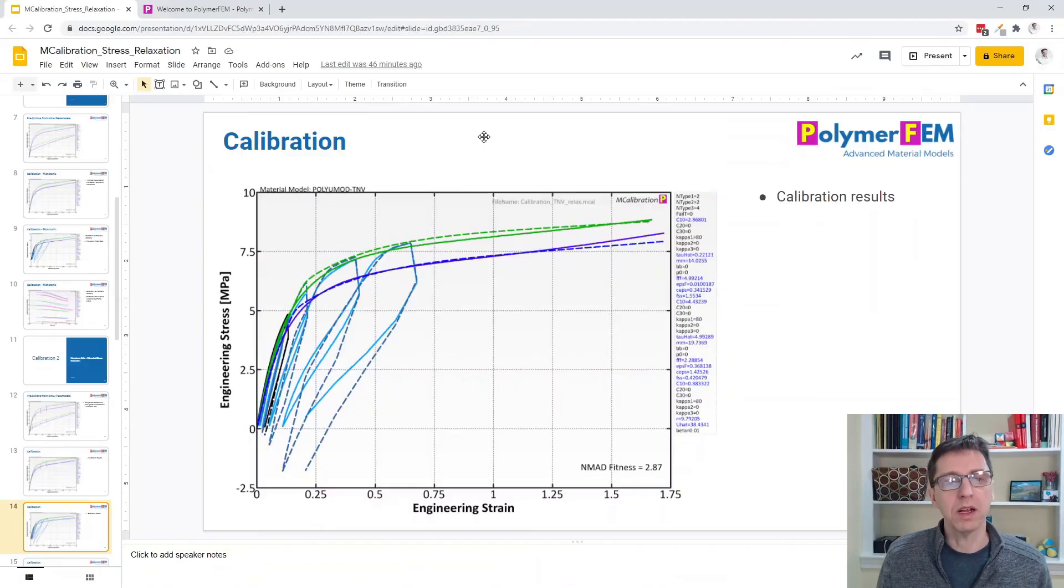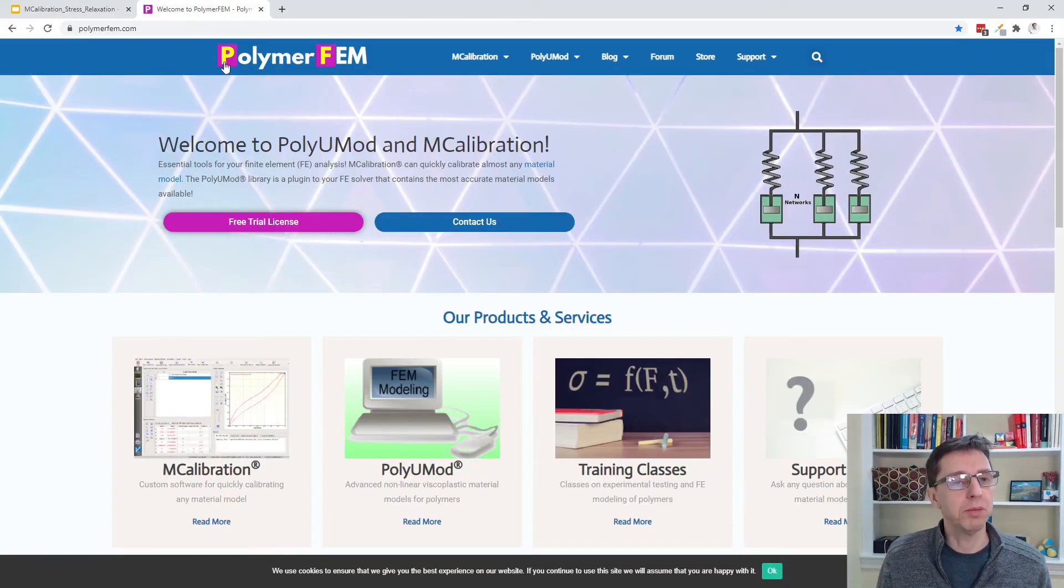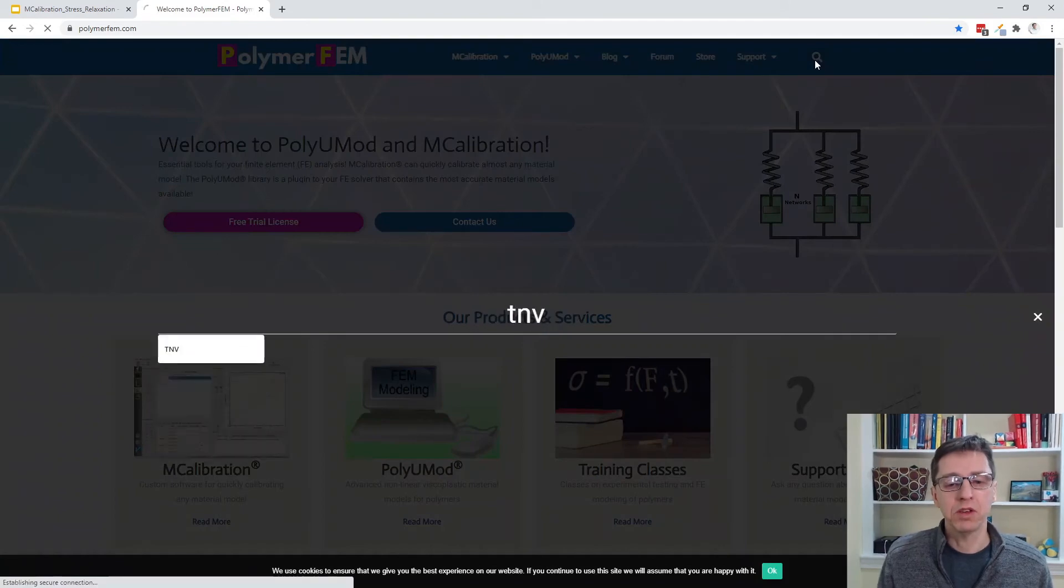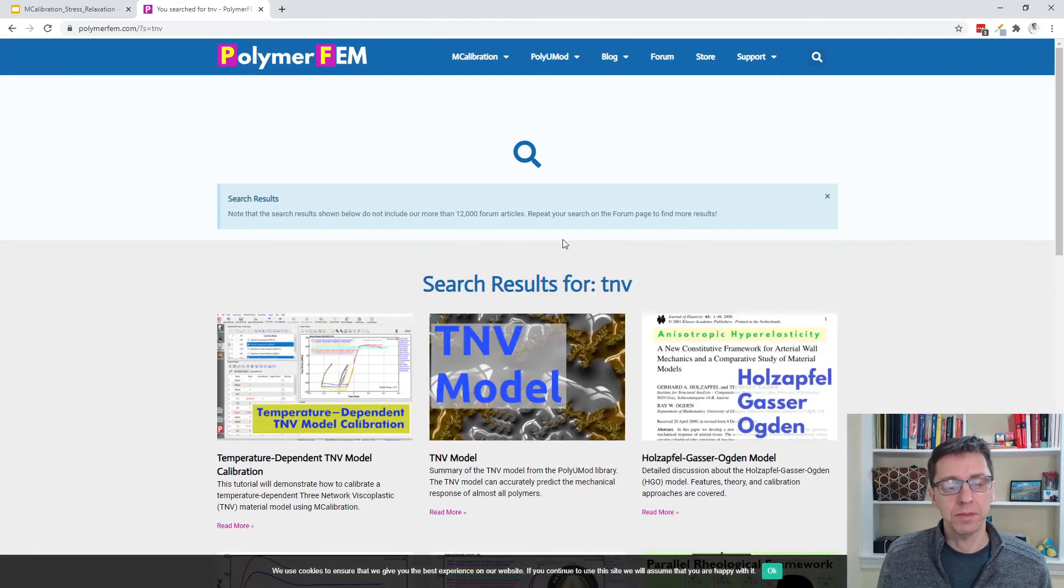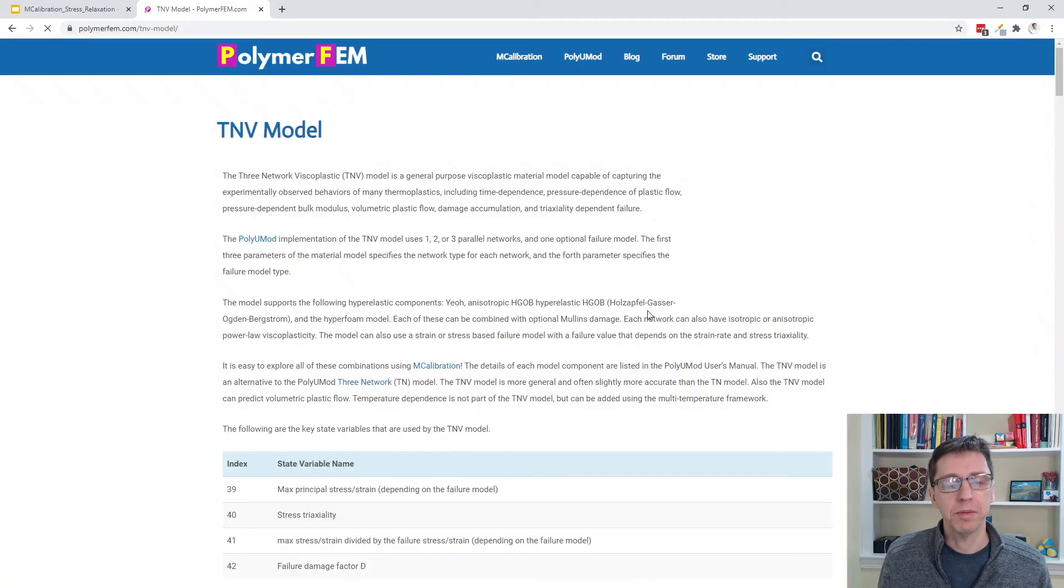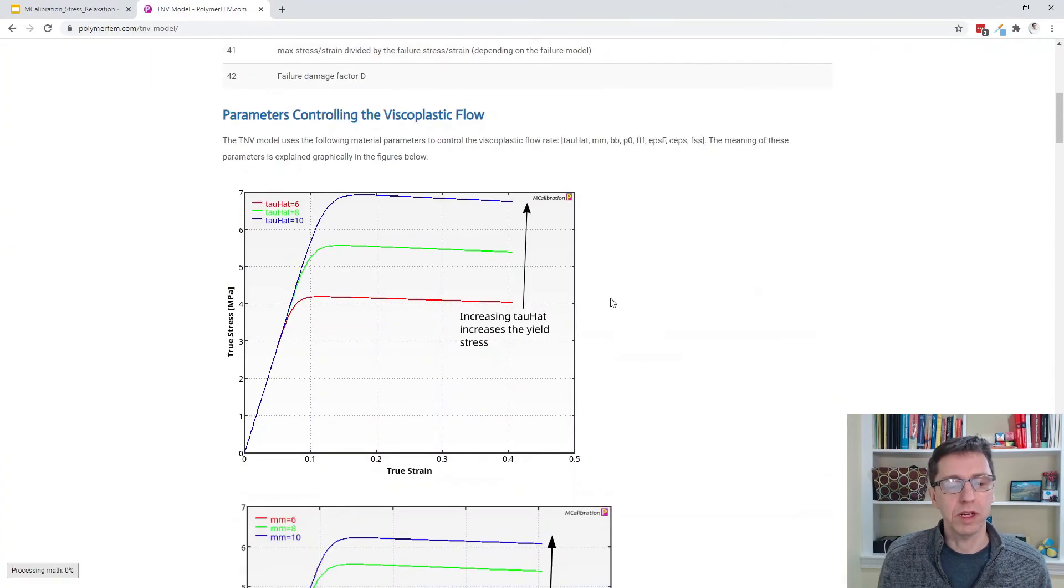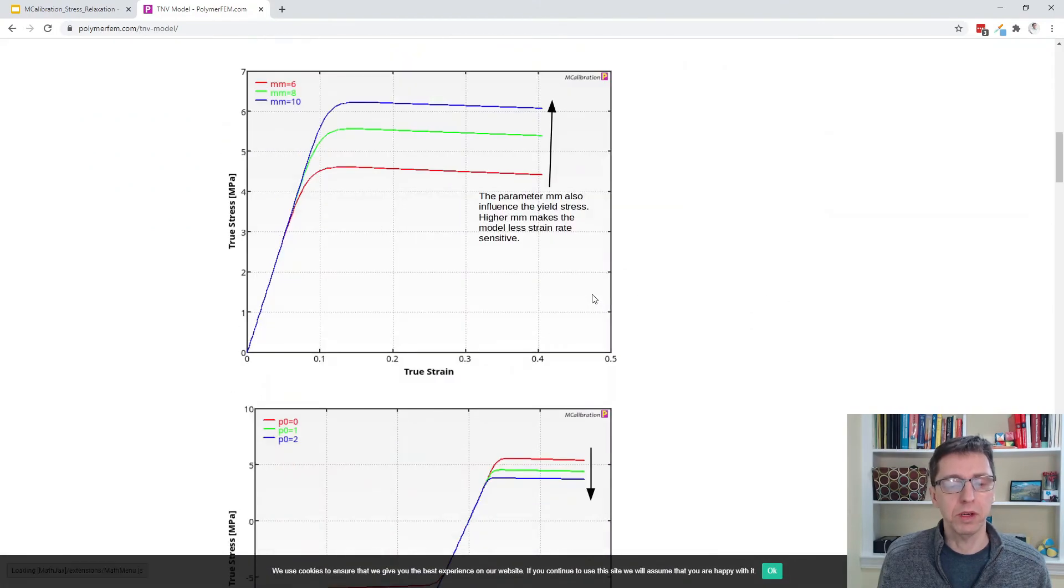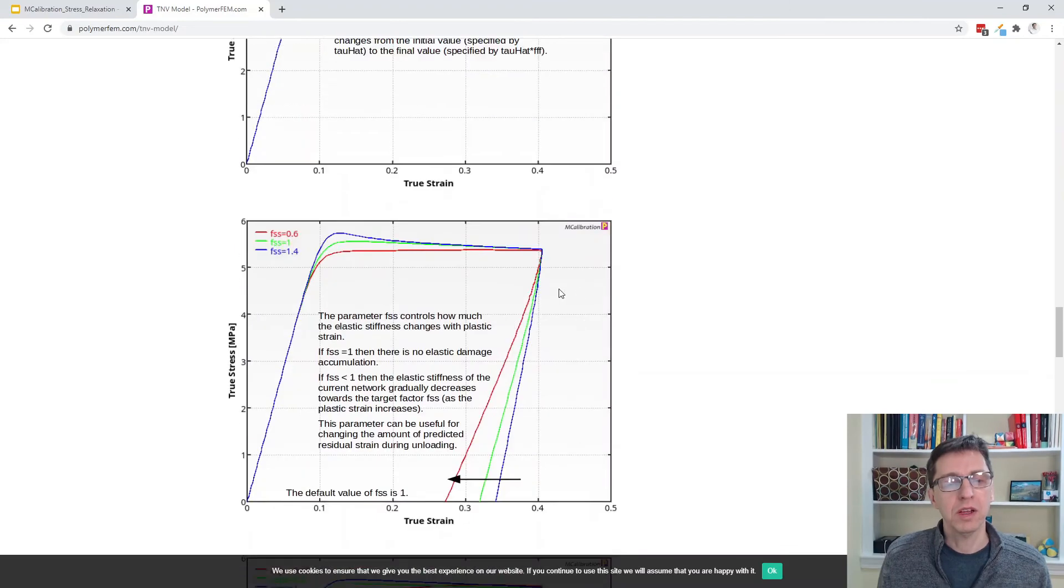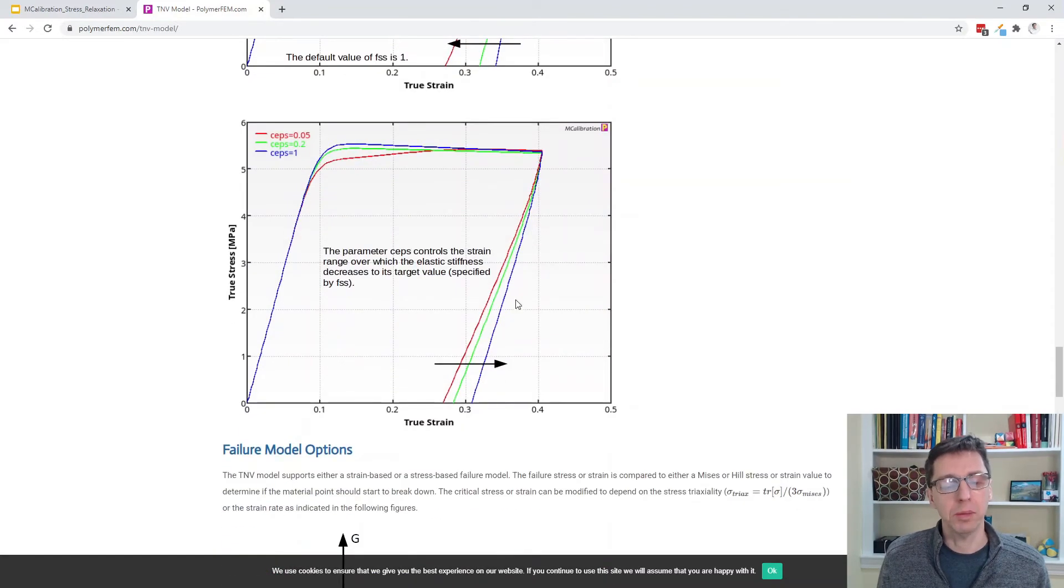To demonstrate that, I'm just going to flip over to polymerfem.com here and tap TNV, which is the name of this material model. If I click on this article, you can see what the different parameters do here. I thought it would be interesting to show this - this particular parameter FSS shows you how this slope after unloading can be controlled using that parameter.